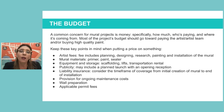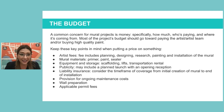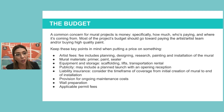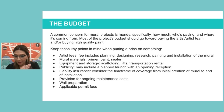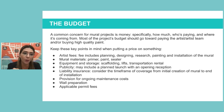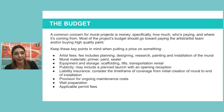The budget: a common concern is the money — where does it come from, how much, who's paying, and when is it coming? All of those things should be outlined in the contract. The main portion of the budget should go to artist fees and buying high-quality materials — those are the two things you should not compromise on. Artist fees include planning, designing, research, painting, and installing the mural.